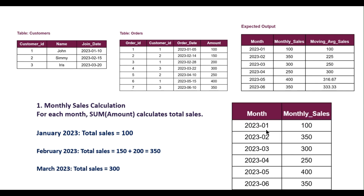The monthly sales result looks like this: January has monthly sales of 100, February has 350, March has 300, April is 250, May is 400, and June is 350. That is the total sum for each particular month.